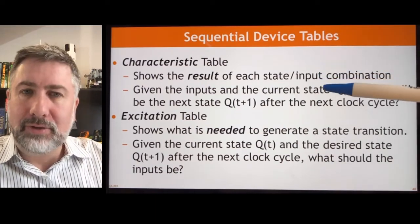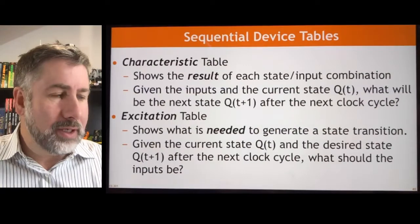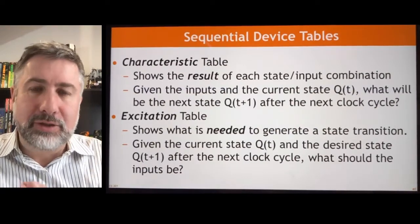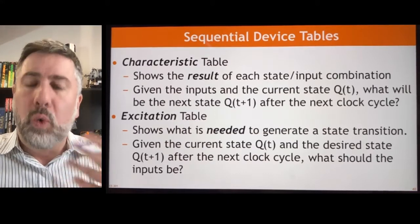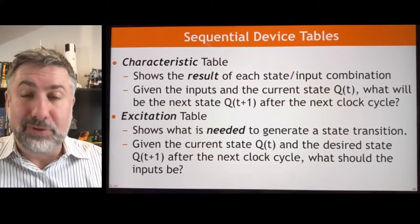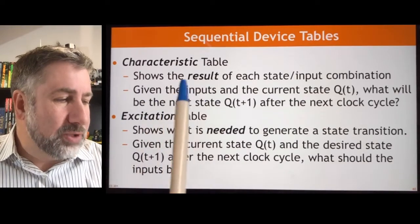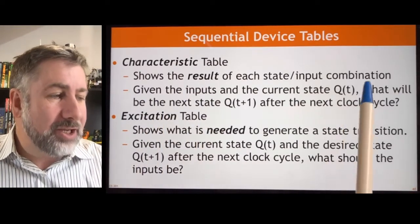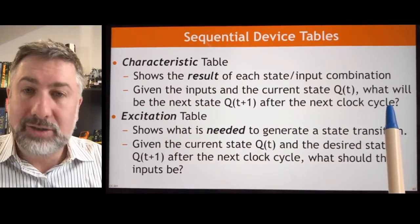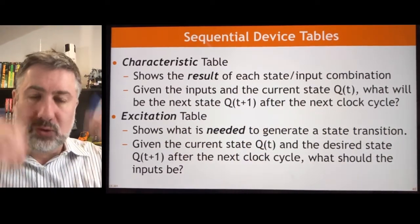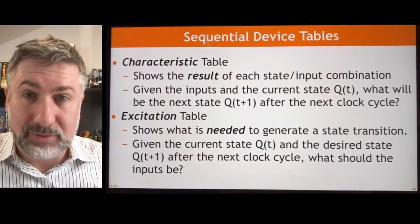The characteristic table tells you what will happen given a particular state-input combination. If I give this device an input, what will the output be depending on the input and the current state? So it says: if I know what the input is and I know what the current state is, what will happen when the clock cycles — when the clock goes to one and then back to zero?